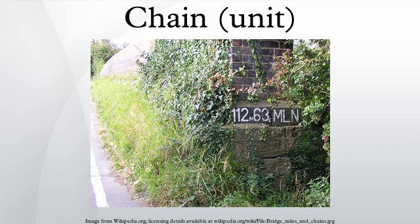Australian and New Zealand use. In Australia and New Zealand, most building lots in the past were a quarter of an acre, measuring one chain by two and a half chains, and other lots would be multiples or fractions of a chain. The street frontages of many houses in these countries are one chain wide. Roads were almost always one chain wide in urban areas, sometimes 1.5 chains or 2.5 chains. Laneways would be half a chain.